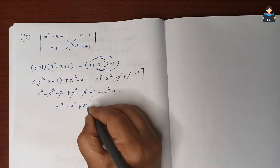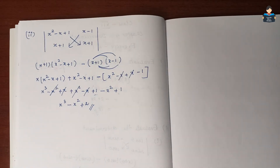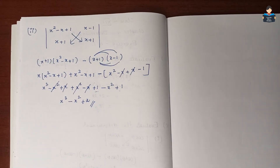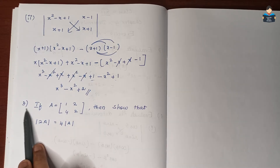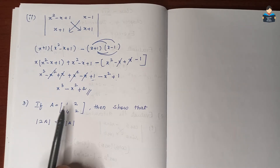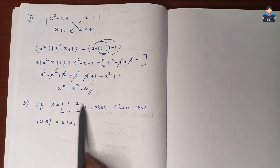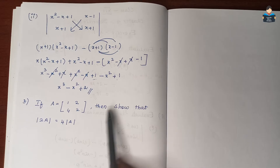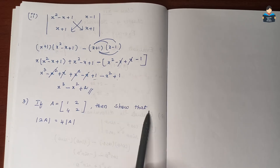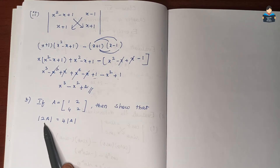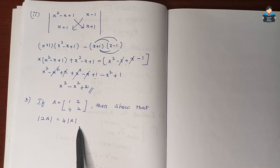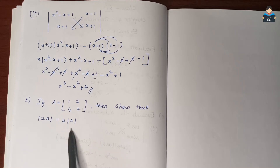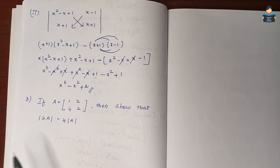So that is the final answer for the second subdivision. Now Question 3: if A is the given matrix, show that det(2A) = 4 into det(A). We will prove LHS equals RHS, solving the LHS part first and then the RHS part.